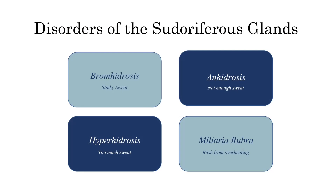Hyperhidrosis is when you sweat too much. Dermatologists nowadays will actually use Botox to treat this by stunting the gland so it doesn't produce so much sweat. Remember, 'hyper' always means too much of something — hyperhidrosis means too much sweat. The last disorder is miliaria rubra — if you've ever gotten that heat rash from being out too long, you've basically damaged those pseudoriferous glands, resulting in a rash from overheating.